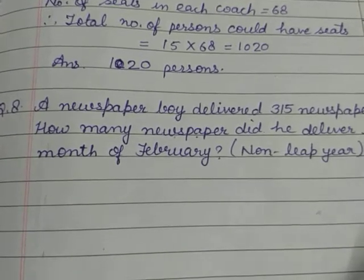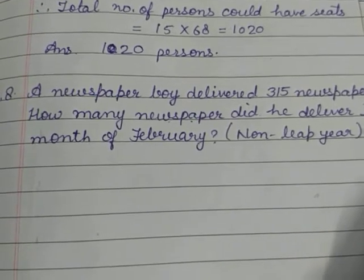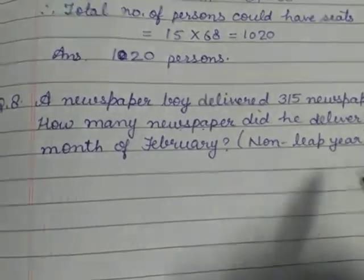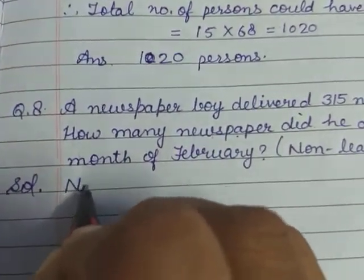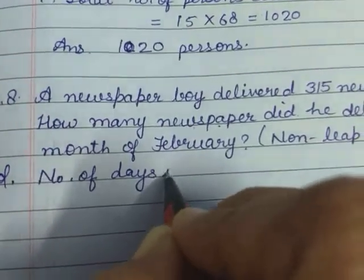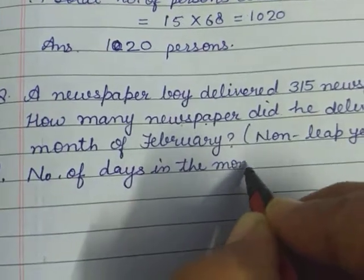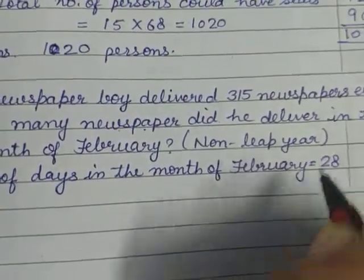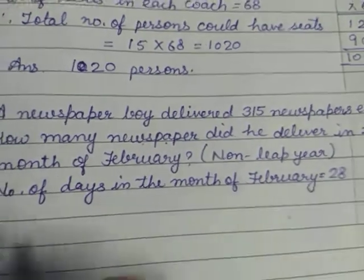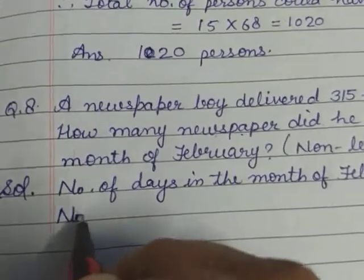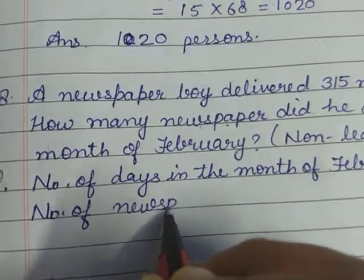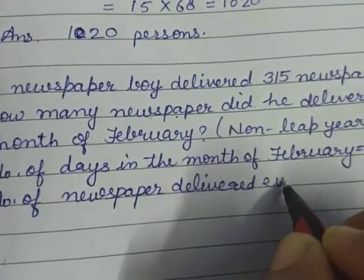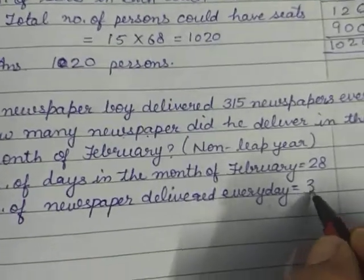February में leap year में कितने days होते हैं? 29 और non-leap year में 28. तो हमें यहाँ पर 28 रखना होगा क्योंकि ये non-leap year है. हम February में 28 days मान कर चलेंगे. Number of days in the month of February is equal to 28, क्योंकि question में हमें दिया है non-leap year है. And number of newspapers delivered every day is equal to 350.